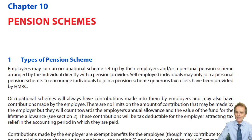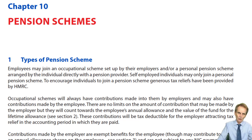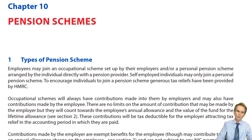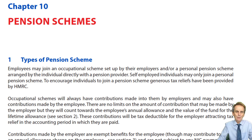So go back to chapter two and check out, if you need to — you may have it already in the forefront of your mind — but otherwise check out what was going on with personal pension contributions: how they were involved in potentially extending your basic and, if necessary, even your higher rate band by the so-called gross amount of personal pension contributions, and their role in establishing adjusted net income in determining the personal allowance that would be available, if indeed it was to be limited because adjusted net income exceeded £100,000.